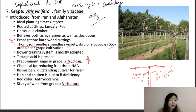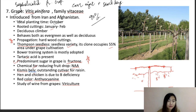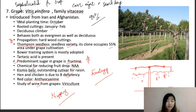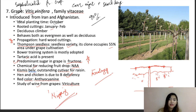The Kniffin training system is also common in grapes — the vine is allowed to grow, tied at the top, and fruiting branches are tied to wires as the berries develop. The predominant sugar in grape is fructose. NAA is used to reduce fruit drop. Kishmish Bely is an outstanding cultivar for raisins. Hen and chicken physiological disorder is due to boron deficiency. Red color in grape is due to anthocyanin. The study of wine from grapes is called viniculture; the study of wine is enology. Nipping is an important horticultural operation in grapes where terminal buds are removed to avoid staggered growth of berries.